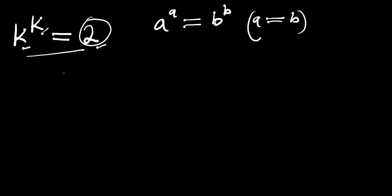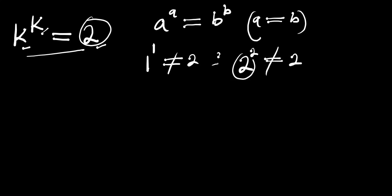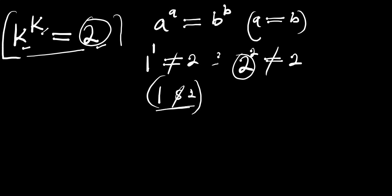If you think the number is 1 — if you raise 1 to the power of itself, this is not equal to 2, so 1 is not the answer. If you also consider 2 — if you raise 2 to the power of itself, this also doesn't equal 2, so 2 is not the answer. The answer falls between 1 and 2, actually in the middle, and we are going to solve this problem to find that particular number.